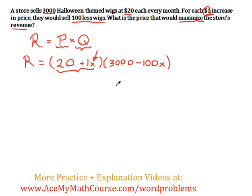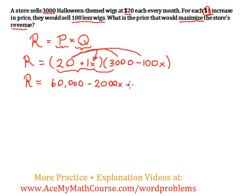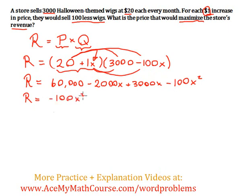Now we can expand this — we're going to get a quadratic equation. Let's FOIL: first, outside, inside, last. 20 times 3,000 is 60,000. 20 times negative 100 is negative 2,000X. X times 3,000 is 3,000X. And X times negative 100X is negative 100X squared. Rearranging: negative 100X squared, then negative 2,000X plus 3,000X equals 1,000X, and we have the 60,000.